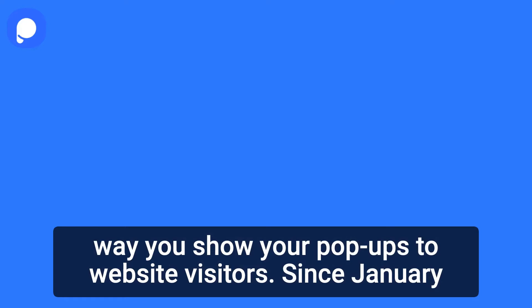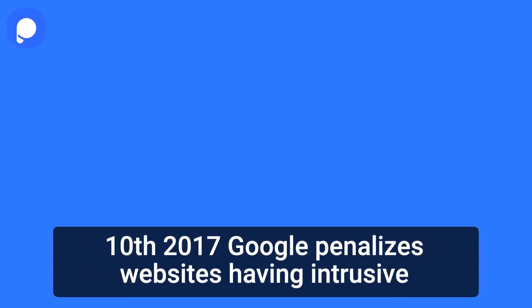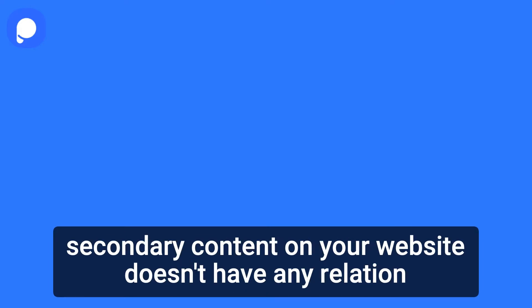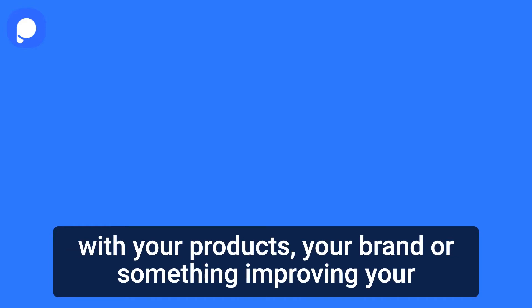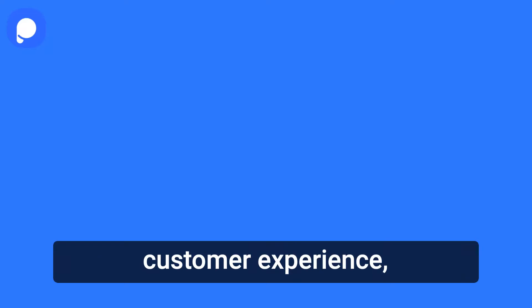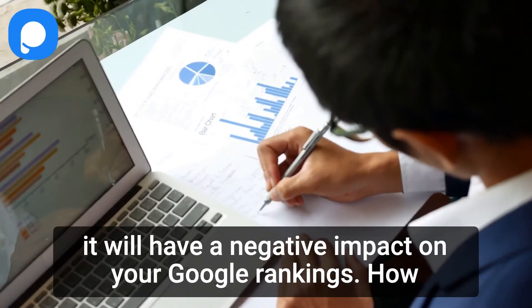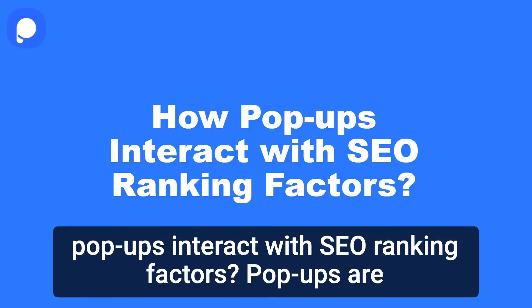Since January 10, 2017, Google penalizes websites having intrusive interstitials. This basically means that if a pop-up or any secondary content on your website doesn't have any relation with your products, your brand, or something improving your customer experience, it will have a negative impact on your Google rankings. How do pop-ups interact with SEO ranking factors?